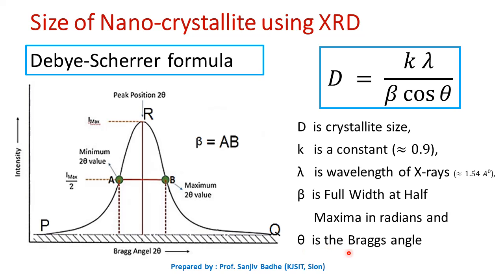Once we get Bragg angle theta and full width at half maximum beta from this graph, we will convert that beta in radians and we can substitute this theta and beta in Debye-Scherrer's formula.